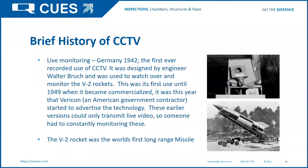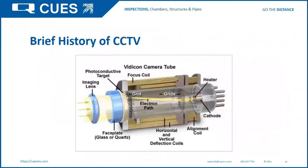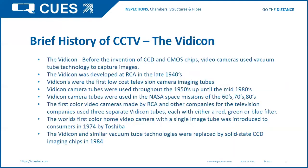The first Vidicon camera tube — an early example — was black and white only with no recording capabilities. The Vidicon is the technology before the invention of CCD chips; video cameras used vacuum tube technology to capture images, developed in the late 1940s. They were the first low-cost television camera imaging tubes, used throughout the fifties until the mid-eighties, and originally used by NASA space missions in the sixties, seventies, and eighties.